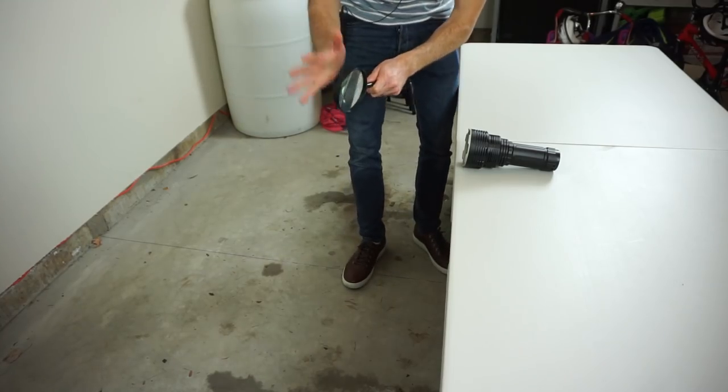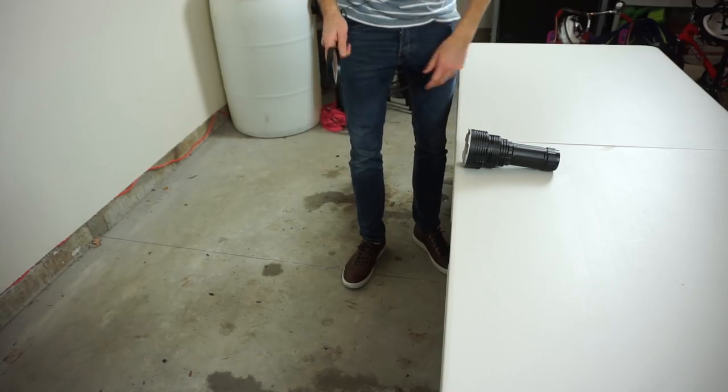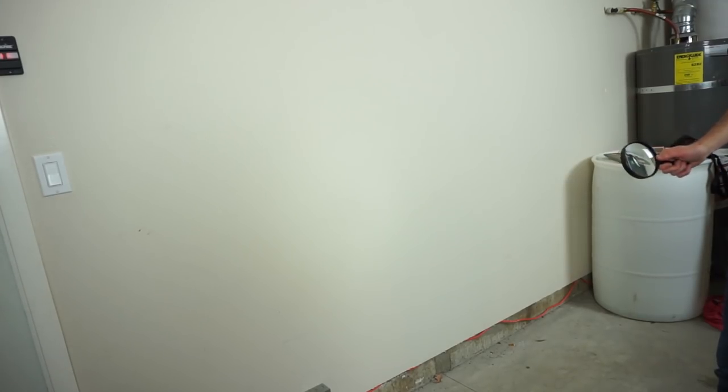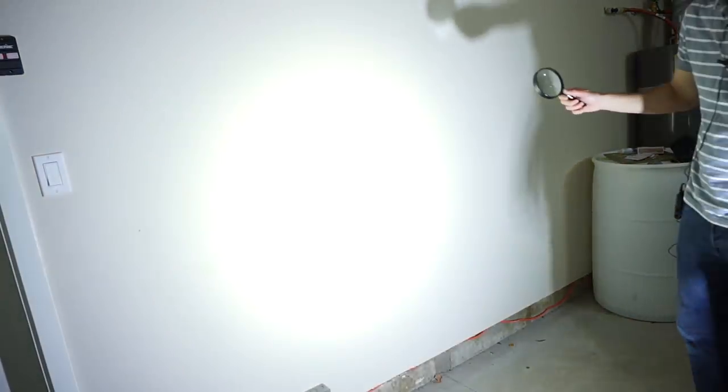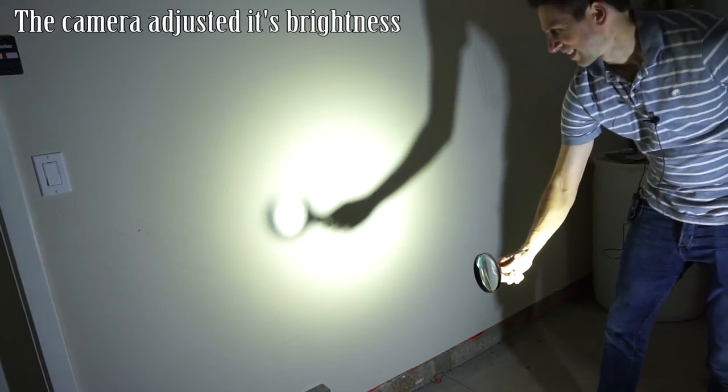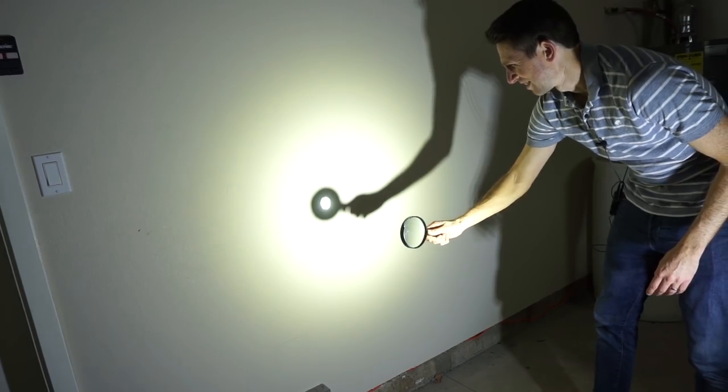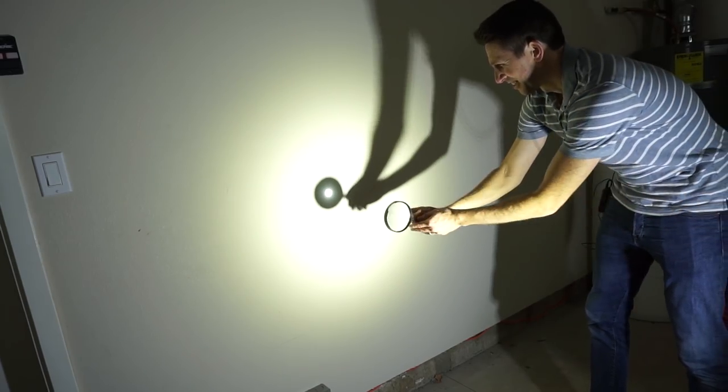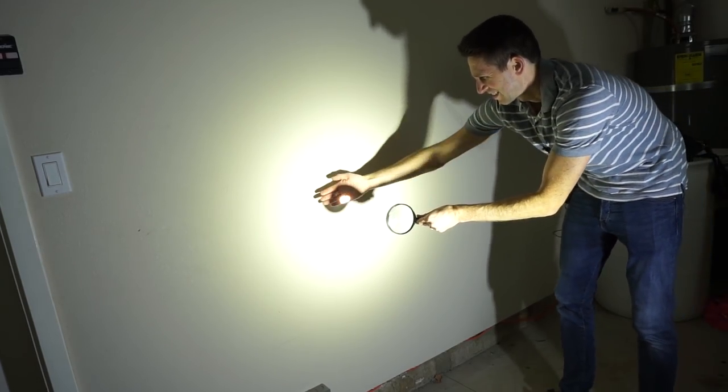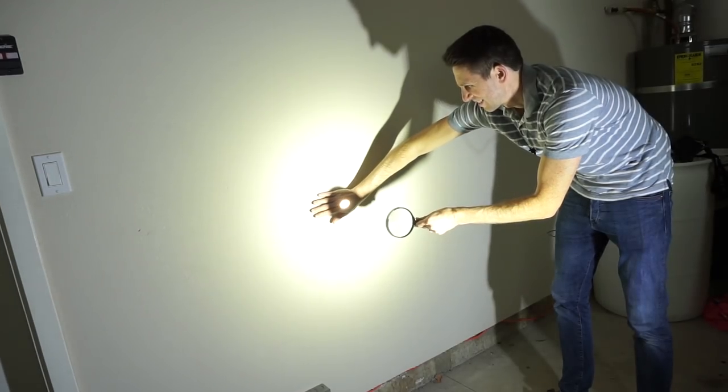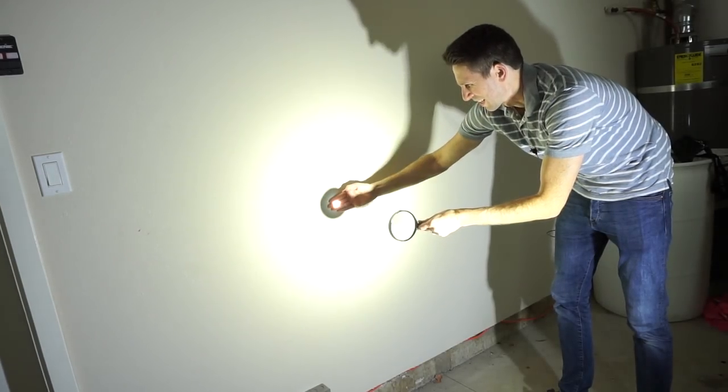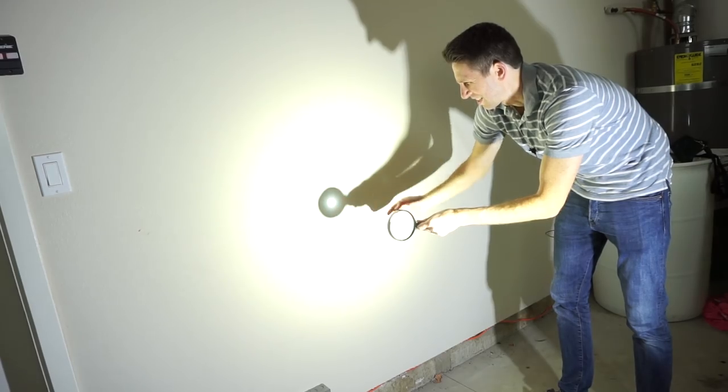First we'll be trying it with a regular magnifying glass. Let's turn on our 32,000 lumens. Three, two, one. Ooh that's bright. Okay, and let's try to concentrate it. So it's warm on my hand, but not hot.